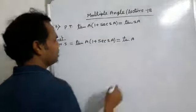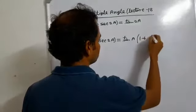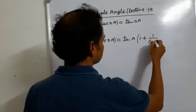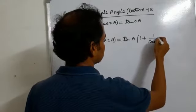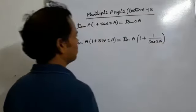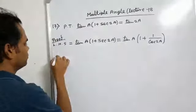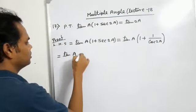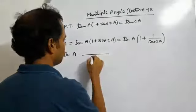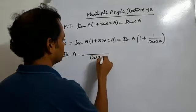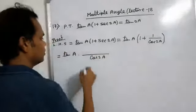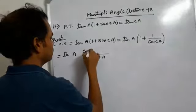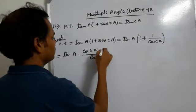And 1 plus sec 2A can be written as 1 plus 1 by cos 2A. Taking LCM cos 2A, we get cos 2A plus 1 over cos 2A.